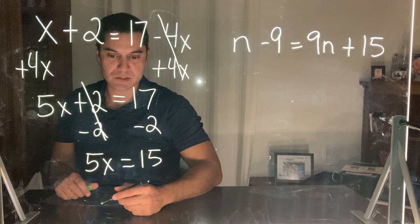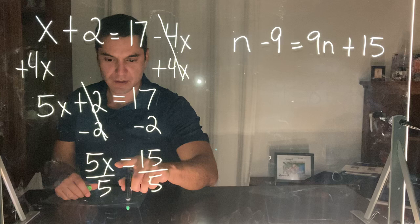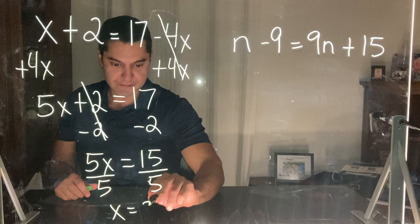Now I have a one-step equation. From here all I do is divide both sides by 5. 5x's divided by 5 gives me a positive x. 15 divided by 5 gives me 3. So my answer is x equals 3.